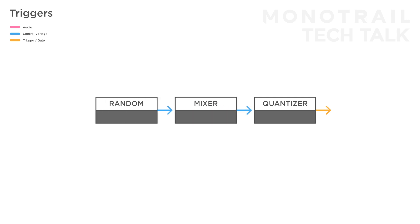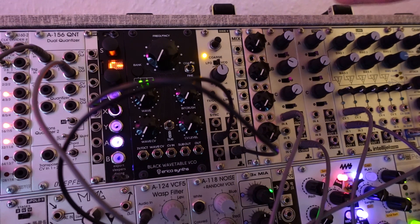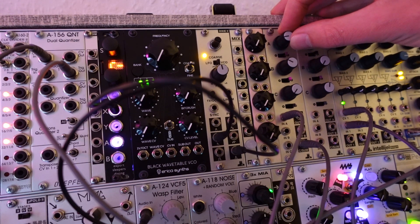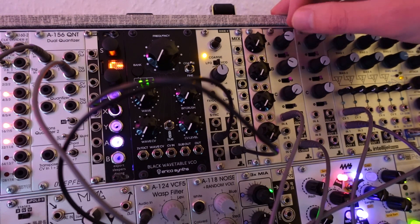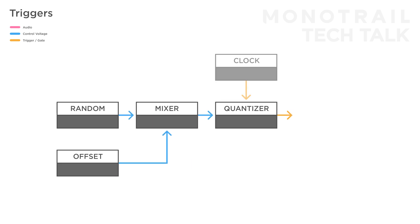If you send a random voltage through a mixer so you can attenuate the random signal and mix it with offset if you like, you can really control the amount of random triggers the quantizer generates — from zero when there is no input, to occasionally with just a tiny amount of random voltage, to a massive string of random triggers. If you'd like to create tempo-synced triggers, you can use the same setup but add a modular clock to the trigger input of the quantizer. In this example, I'll use a 16-step clock to trigger the quantizer and use the quantizer's trigger out to trigger a hi-hat module, dialing in the amount of tempo-synced random triggers with the mixer.